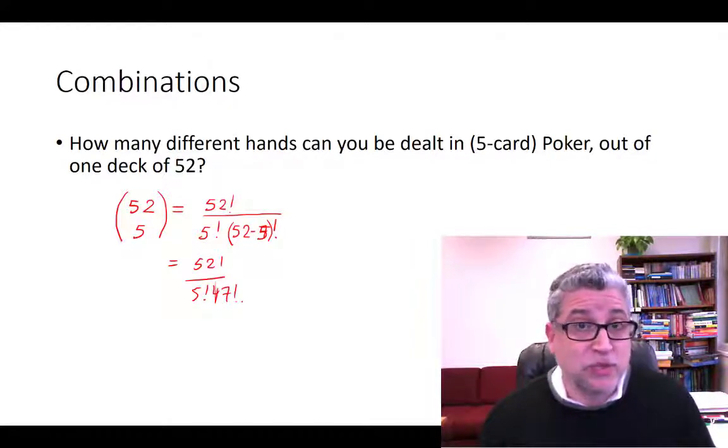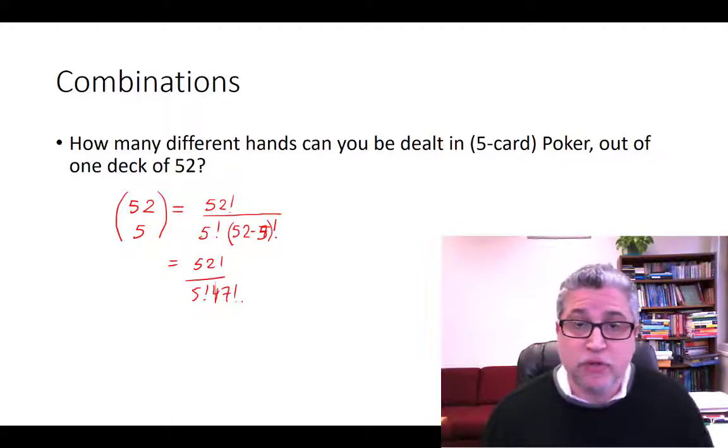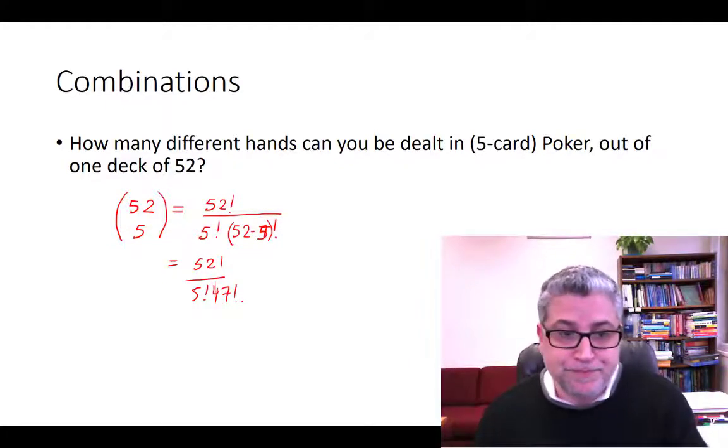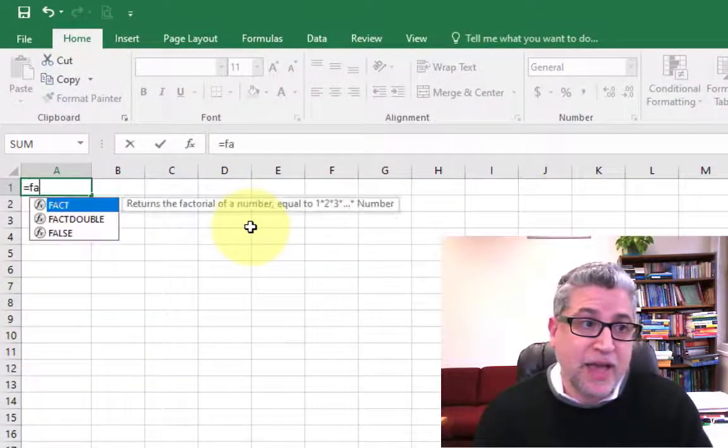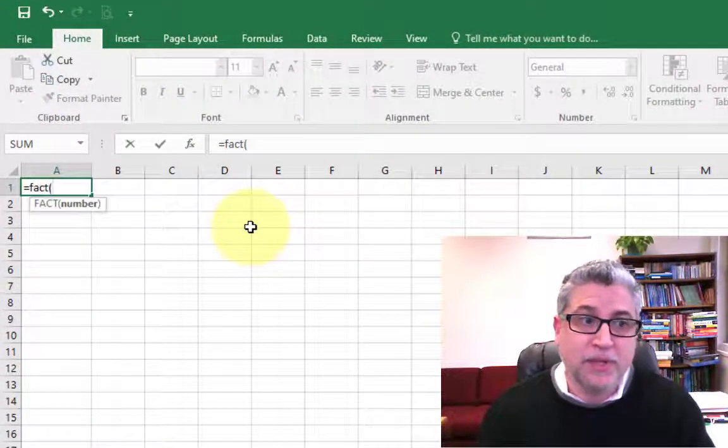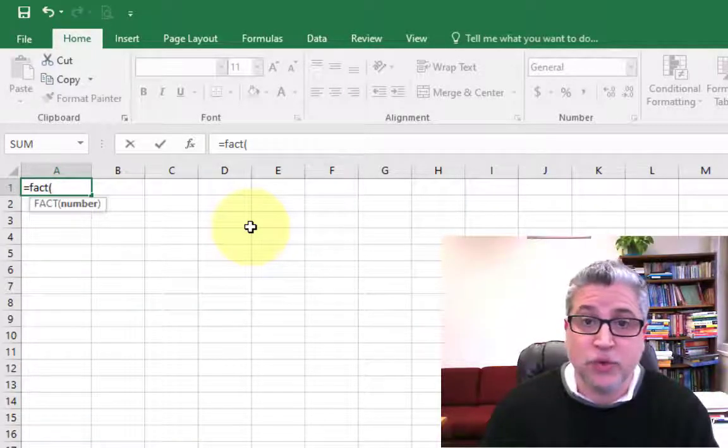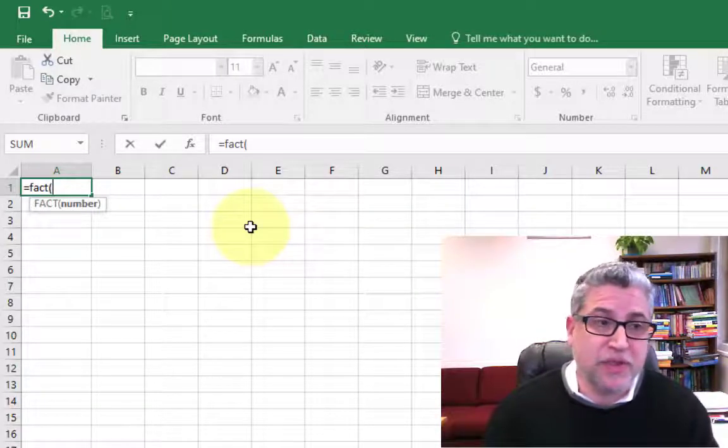Now we could key this in by hand into a calculator. That gets tough. So let's switch over to Excel and see how we could do this using Excel's factorial formula. The factorial function in Excel is f-a-c-t in parentheses and then the number that you need to calculate for factorial. Unfortunately the exclamation mark doesn't work. That's a different thing in Excel.